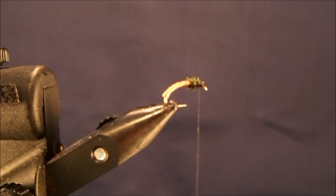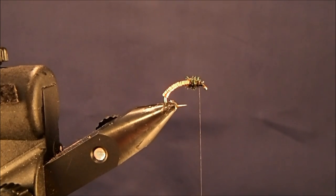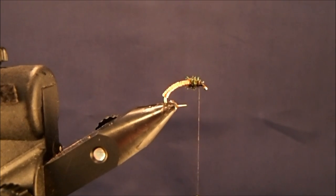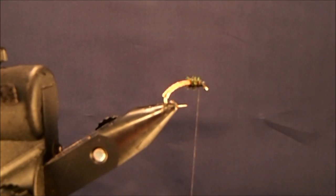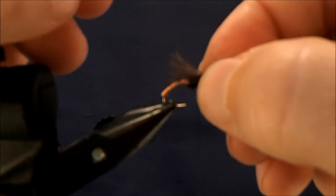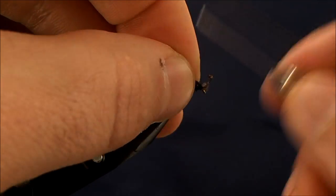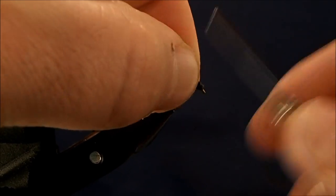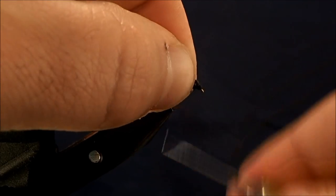CDC comes in a couple of different varieties. For this, I like to use the CDC puffs. And this is just a dun CDC puff. I'm going to place that right on top of the fly, bring it back just short of the bend, and then tie that in with a couple of wraps on top. Pull that back. Put a couple of additional wraps in there and start to create that head.